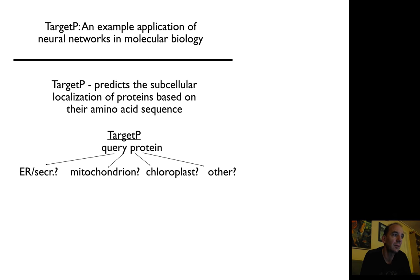As an example of how to use a neural network in bioinformatics, we will describe TargetP. TargetP is a predictor developed by Oluf Emanuelsson to predict the sub-cellular localization of a protein.